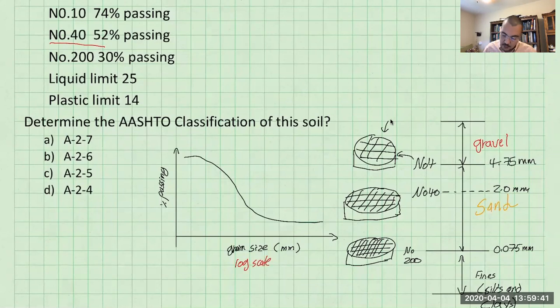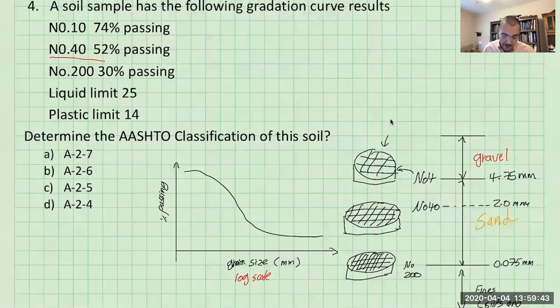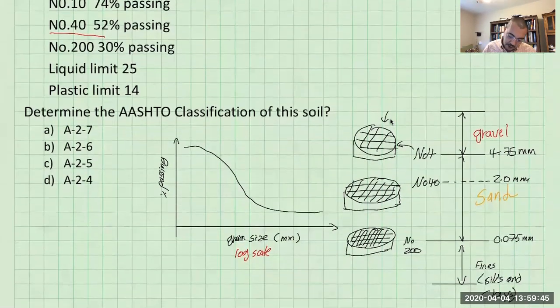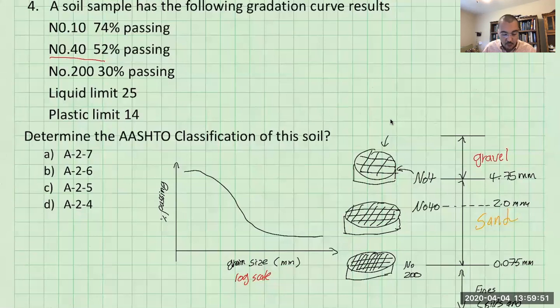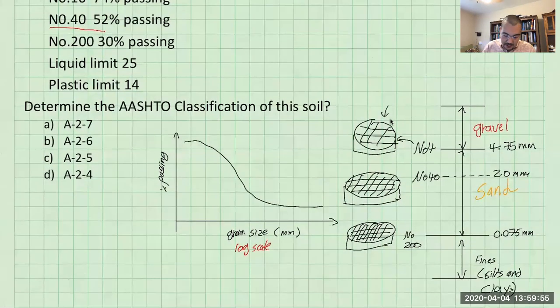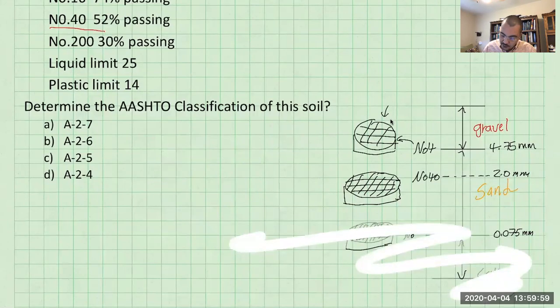And you plot the results of this test on this curve on the left hand side and that's known as soil gradation curve. This has to be log scale and this is percent passing. This is a good background for you to just understand what are these givens, what do they mean? And now we can move to solving the question.